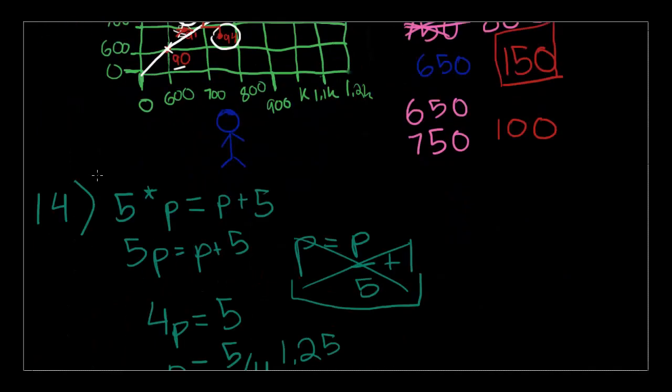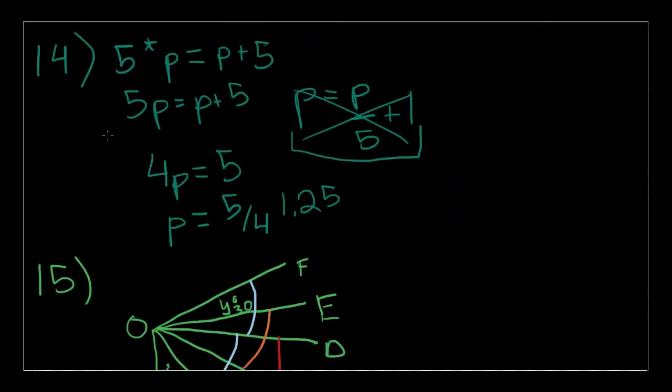Now, we'll move on to number 14, which is also written out. Number 14 is just this equation. Five times a number is the same as the number added to 5. What is the number? We write it out. Five times a number is equal to the number plus 5. To solve this, let's just subtract P from both sides. So 4P is equal to 5. And now, let's divide by 4 on both sides. So P is equal to 5 over 4 or 1.25.